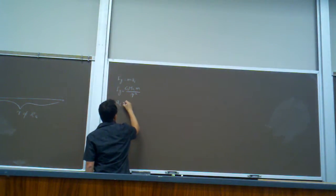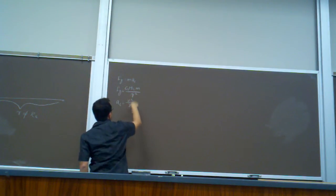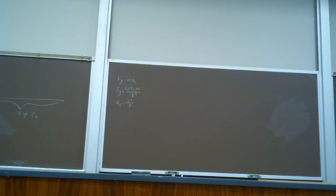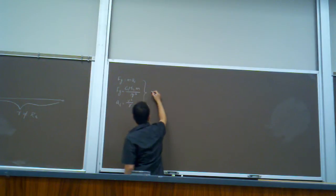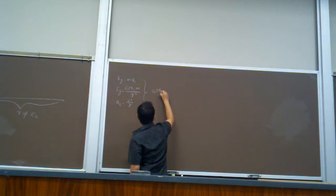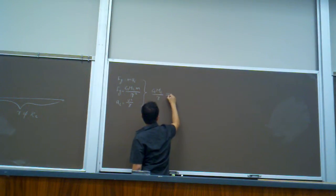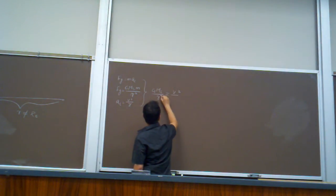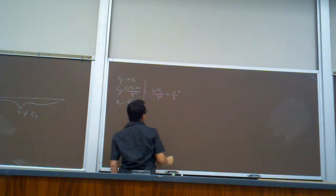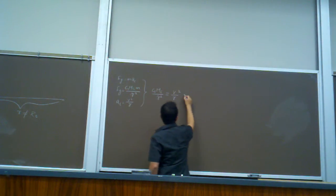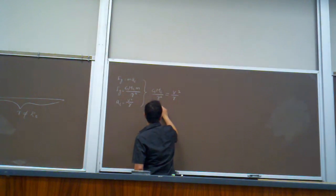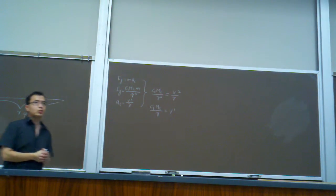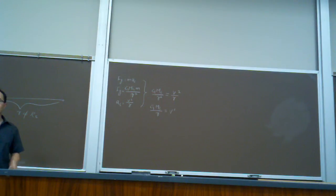On the other hand we know Fg equals to GmME over R squared. And Ac equals to V squared over R. So if we substitute these two into the first equation, after canceling the mass, we get GmE over R squared equal to V squared over R. And then it becomes GmE over R equals to V squared.